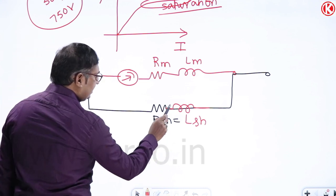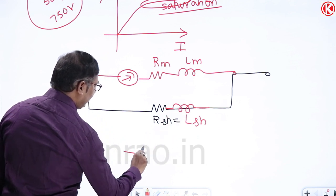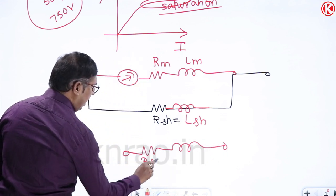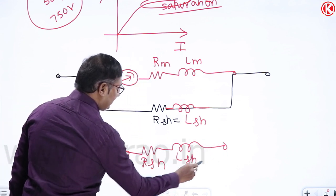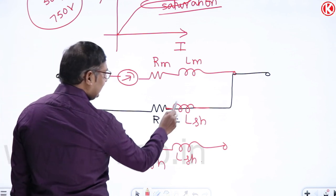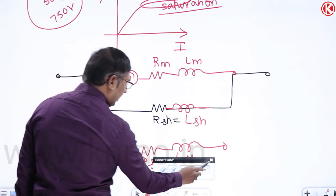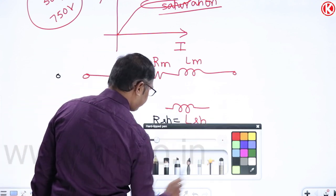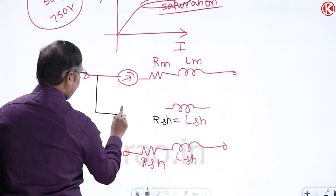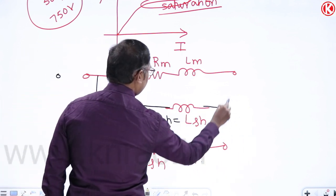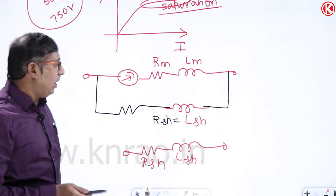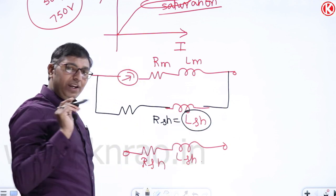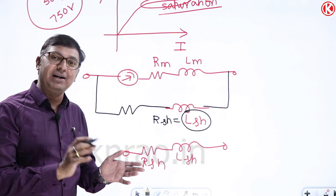The shunt is a coil with both Rsh and Lsh. This is not a shorted inductor — it is a coil with resistance and inductance in parallel with the meter. The shunt inductance ensures frequency independence, because it cancels the frequency effect of the meter's own inductance.